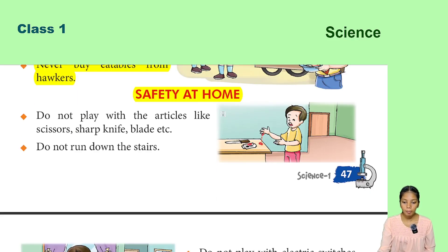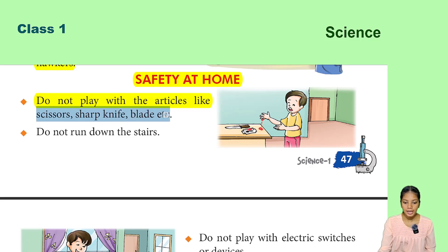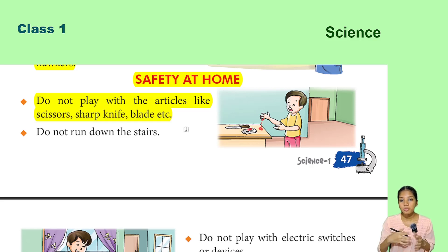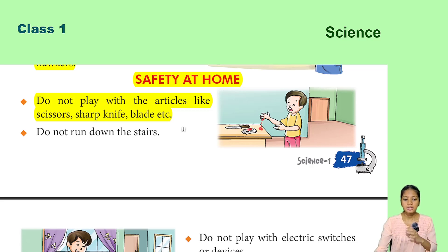Safety at home. Do not play with sharp articles like scissors, sharp knives, or blades — these objects are very sharp and can harm you. You should not play with scissors, knives, or blades. Do not run down the stairs.